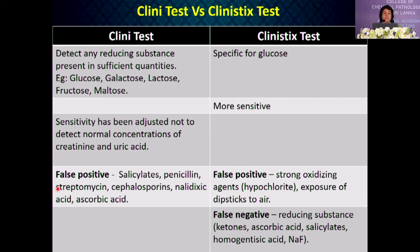For Clinitest, false positives can be caused by various drugs including salicylates, penicillin and streptomycin. For Clinistix, false positives can be caused by strong oxidising agents and prolonged exposure of the strip to air. False negatives for Clinistix can be caused by reducing substances such as ketones, ascorbic acid, salicylates and homogentisic acid.